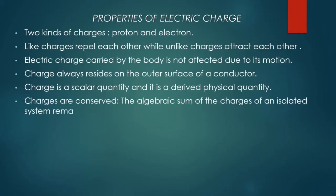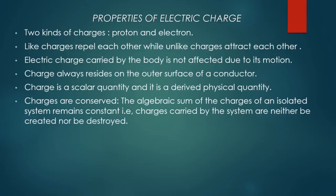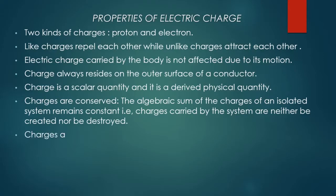Charges are conserved: the algebraic sum of the charges of an isolated system remains constant — charges are neither created nor destroyed. So in an isolated system with many charges, whether you remove an electron, add two protons, or any other combination, the algebraic sum always remains constant.